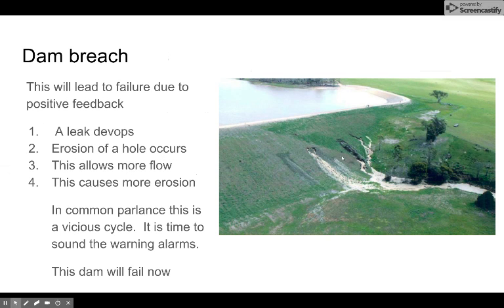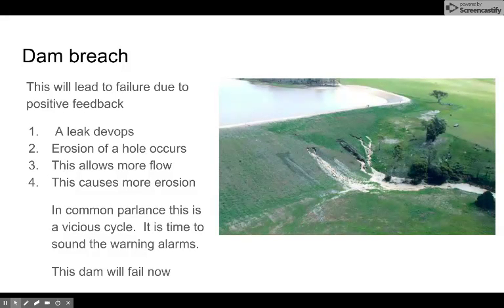This dam breach is an example of positive feedback. If the earth gives way and a stream starts, the dam is finished very quickly — because as the water cuts a bigger opening, more water can flow, and when more water flows, it cuts an even bigger opening. This can go from a thumb-sized hole you could plug to complete dam failure within an hour or two. This has to be dealt with immediately, and if it's a really large dam, you put up the sirens and warn the town it's about time to head for the hills.